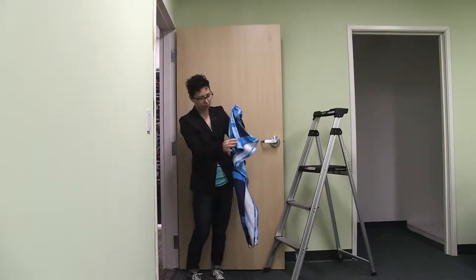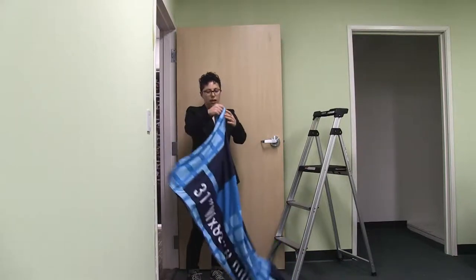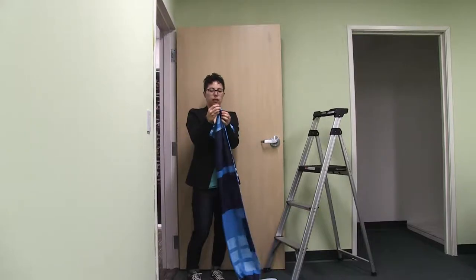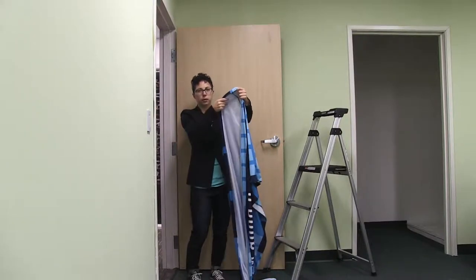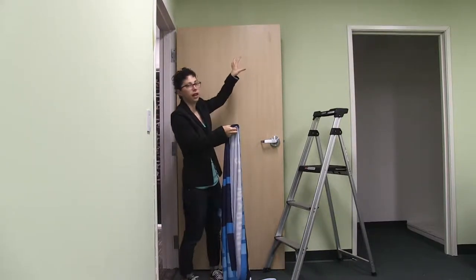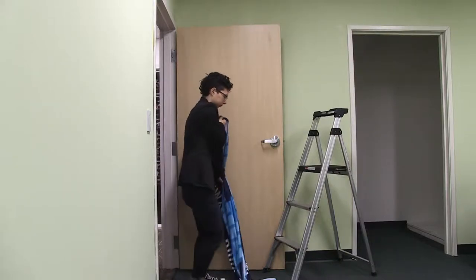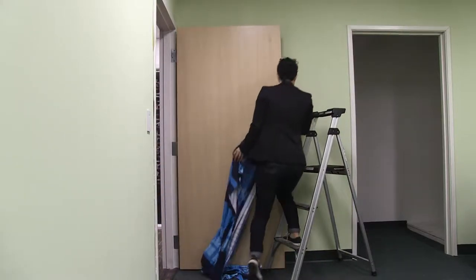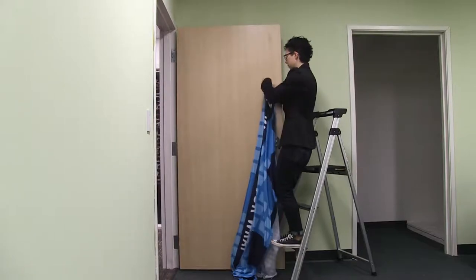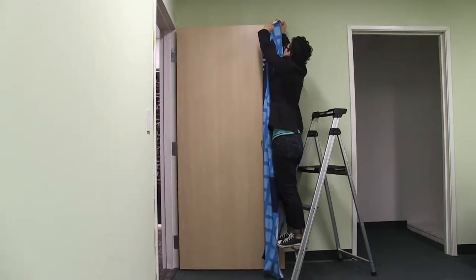The first thing we're going to do is open our graphic, and using the top of the graphic, we're just going to slightly pull it apart, which will create a pull pocket. We're going to slide it onto the top of our door. I'm just going to slide this pull pocket onto the top of the door.